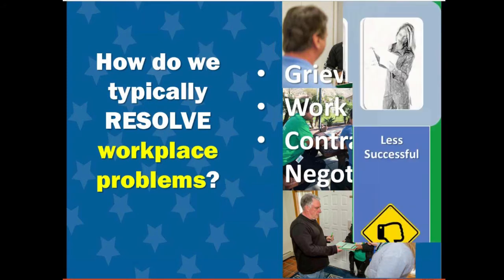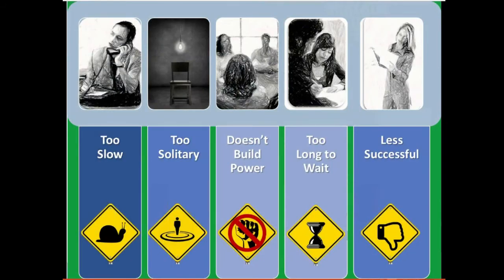But these approaches are not always the most timely or effective for solving the problem or building union power. Grievances can take too long — going through each step, and if the matter goes to arbitration, it could be a year or more before the problem is resolved, and usually only the grievant knows anything is happening. Having the staff rep work it out with the boss might solve the problem, but it doesn't give members a sense of their power. And waiting for negotiations could mean the problem festers for years. Often these methods aren't successful — we don't win because being right is not enough. It's about power.